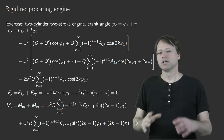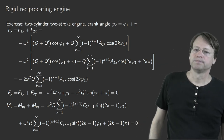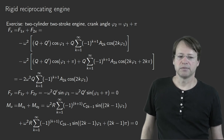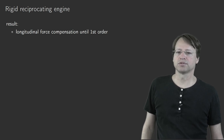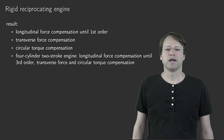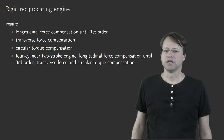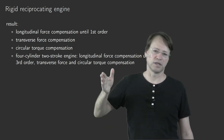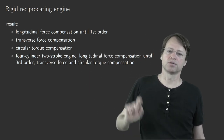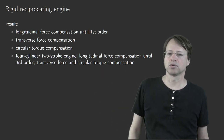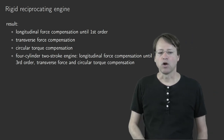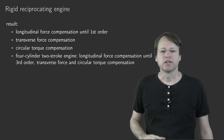In summary, the two-cylinder two-stroke engine achieves first-order longitudinal force compensation, full transverse force compensation, and full circular torque compensation. Moving to a four-cylinder two-stroke engine extends this to third-order longitudinal force compensation while maintaining transverse force and circular torque compensation, progressively eliminating higher harmonics order by order.